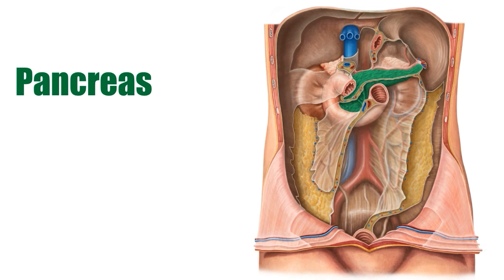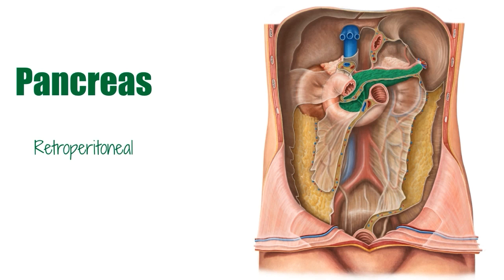This organ, measuring approximately 15 centimeters in length, is retroperitoneal except for the small part of its tail, and lies mostly posterior to the stomach, which we just removed from this image — now in what we call the duodenal loop and partially behind the omental bursa, which is also not visible here as we removed those structures.